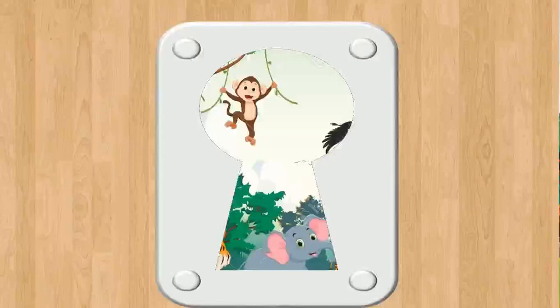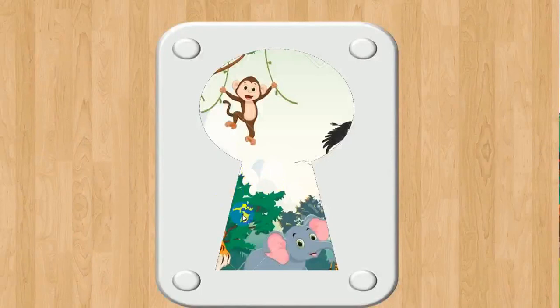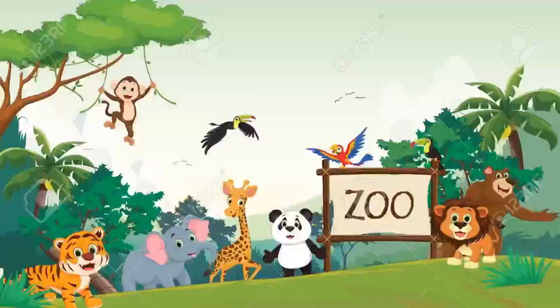Ok kids, let's look at the picture. What can you see? I can see a monkey and an elephant. So can you guess where the animals are? Yes, the animals are in the zoo. Good job kids!